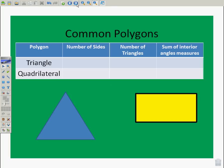Common polygons. We're going to start out with a triangle and a quadrilateral. With these three columns here, we have the number of sides, which is pretty self-explanatory, the number of triangles, which I will show you, and the sum of the interior angle measures. Let's take apart a triangle. The number of sides, obviously, a triangle has three sides.